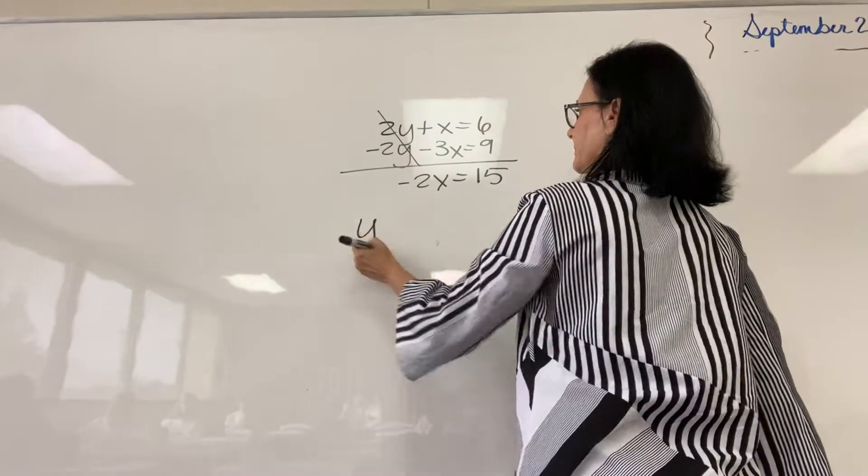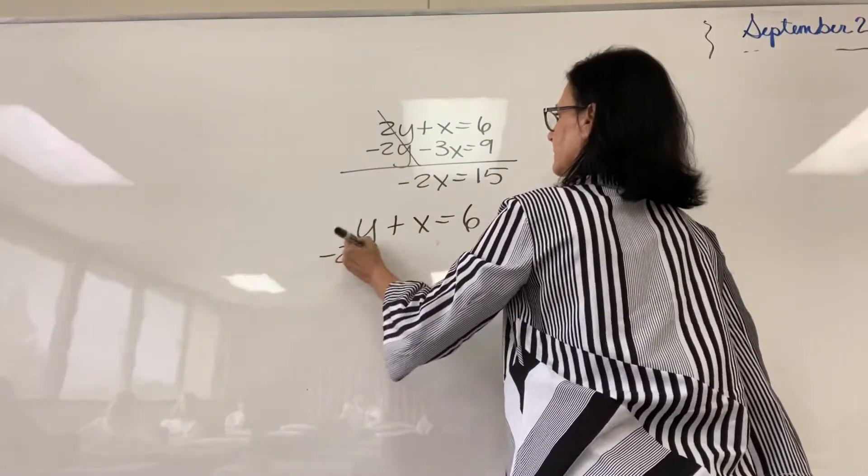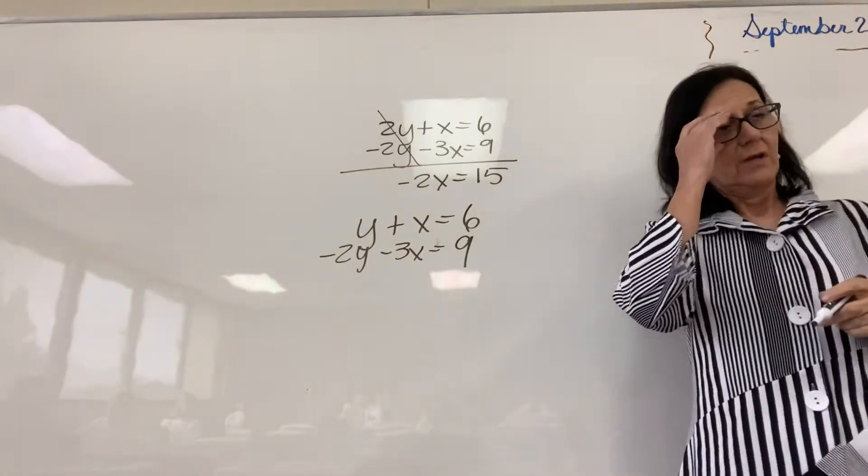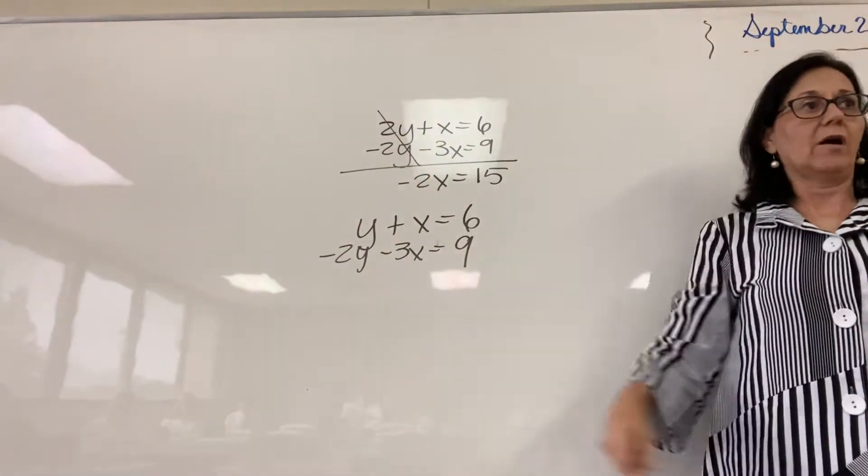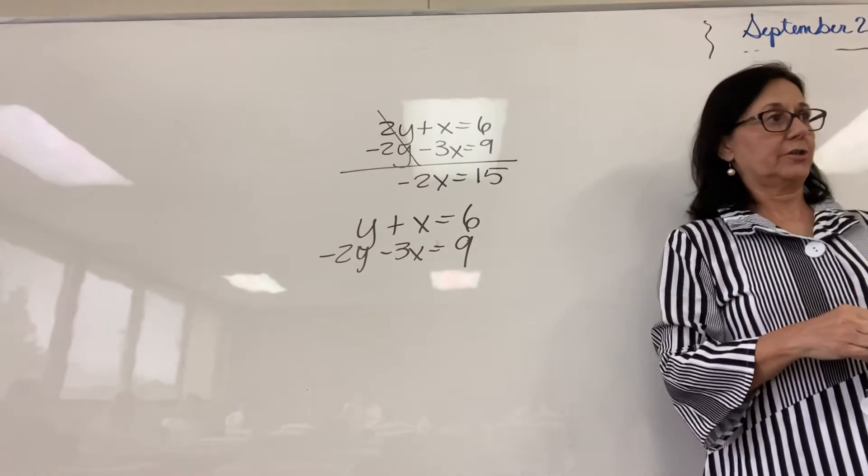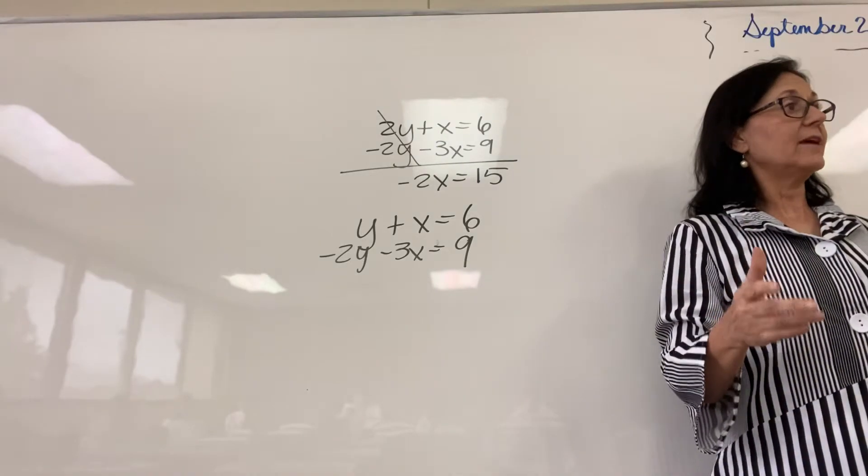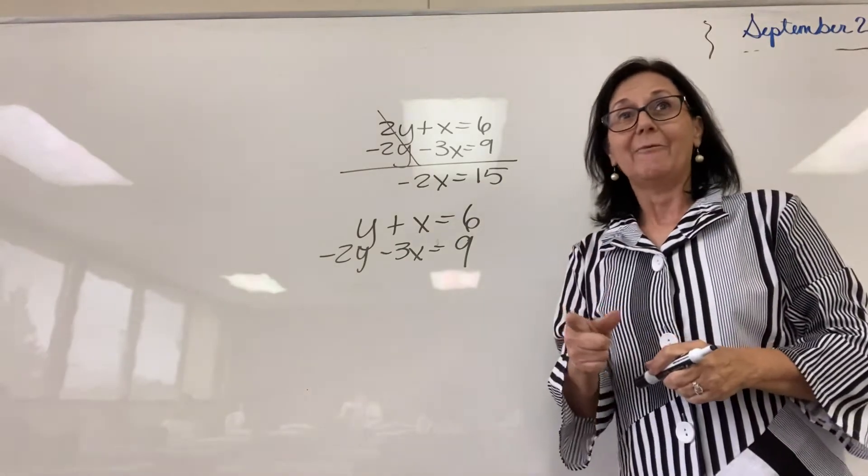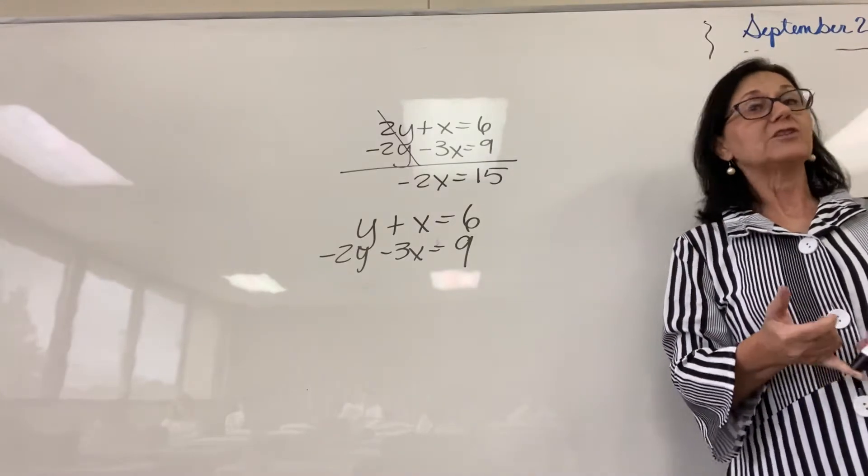Let's suppose we have variables and none of their coefficients are inverses. In fact, none of the coefficients even match. Then what we can do, because we have an equal sign, is we can multiply every term, that's a rule, right? We can multiply every term by one value, such that the coefficients are inverse.